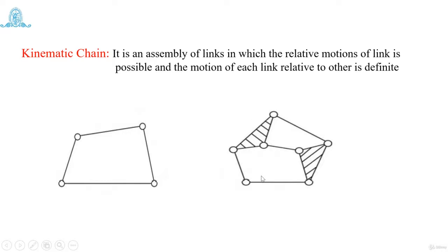Similarly, there is another kinematic chain example where triangular shapes represent ternary links, and the other members are binary links. A binary link has only two nodes. A ternary link is a single link with three different nodes — it can be attached to three different links. These assemble to form a kinematic chain, with definite relative motion between them.